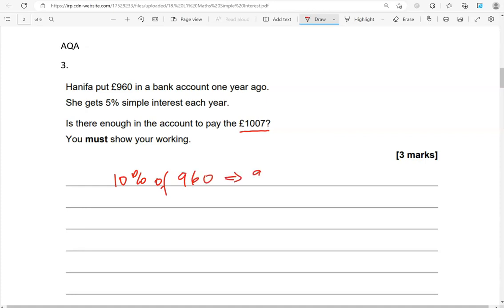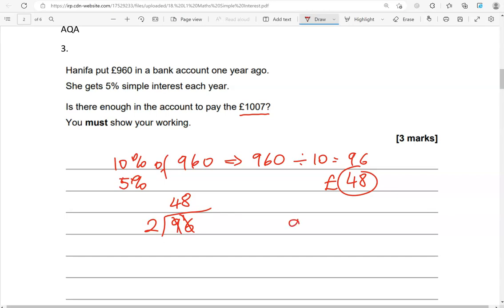So we'll work out 10% of 960, by doing 960 divided by 10, which gives us 96. So 5% is half of 96. So 96 divided by 2. How many twos fit into 9? That is 4, and we have 1 remaining. How many twos into 16? That is exactly 8. So that gives us 48 pounds. That is interest. So 960 now, add 48.